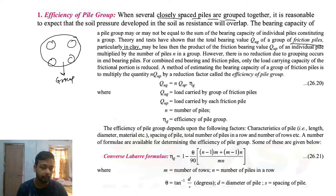Theory and tests have shown the total bearing of a group of friction piles, particularly in clay. When we design this group pile, there is one part normal load and a friction resistance. The method of estimating the bearing capacity of a group pile involves multiplying the quantity n times Q_up by a reduction factor called efficiency.